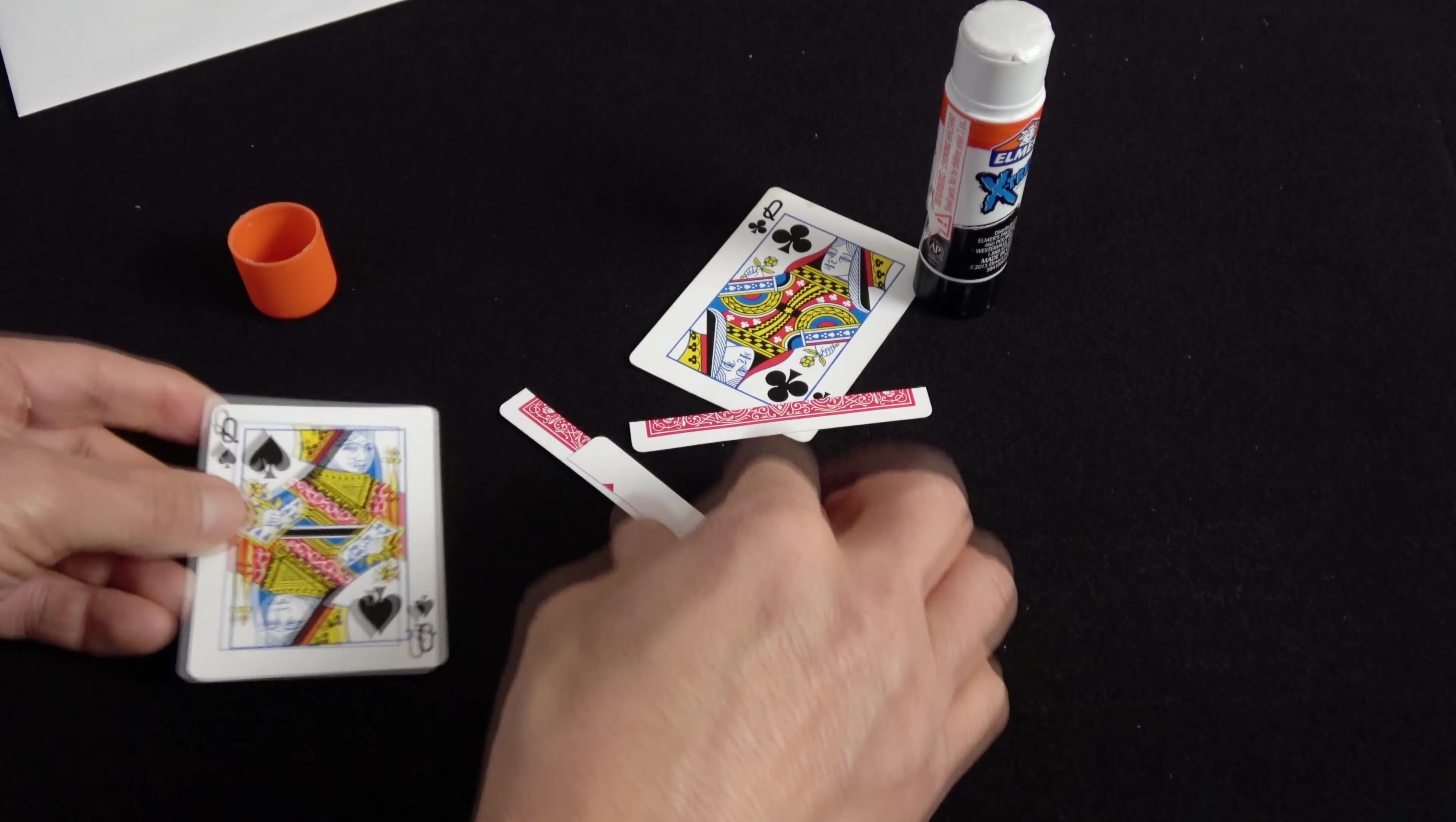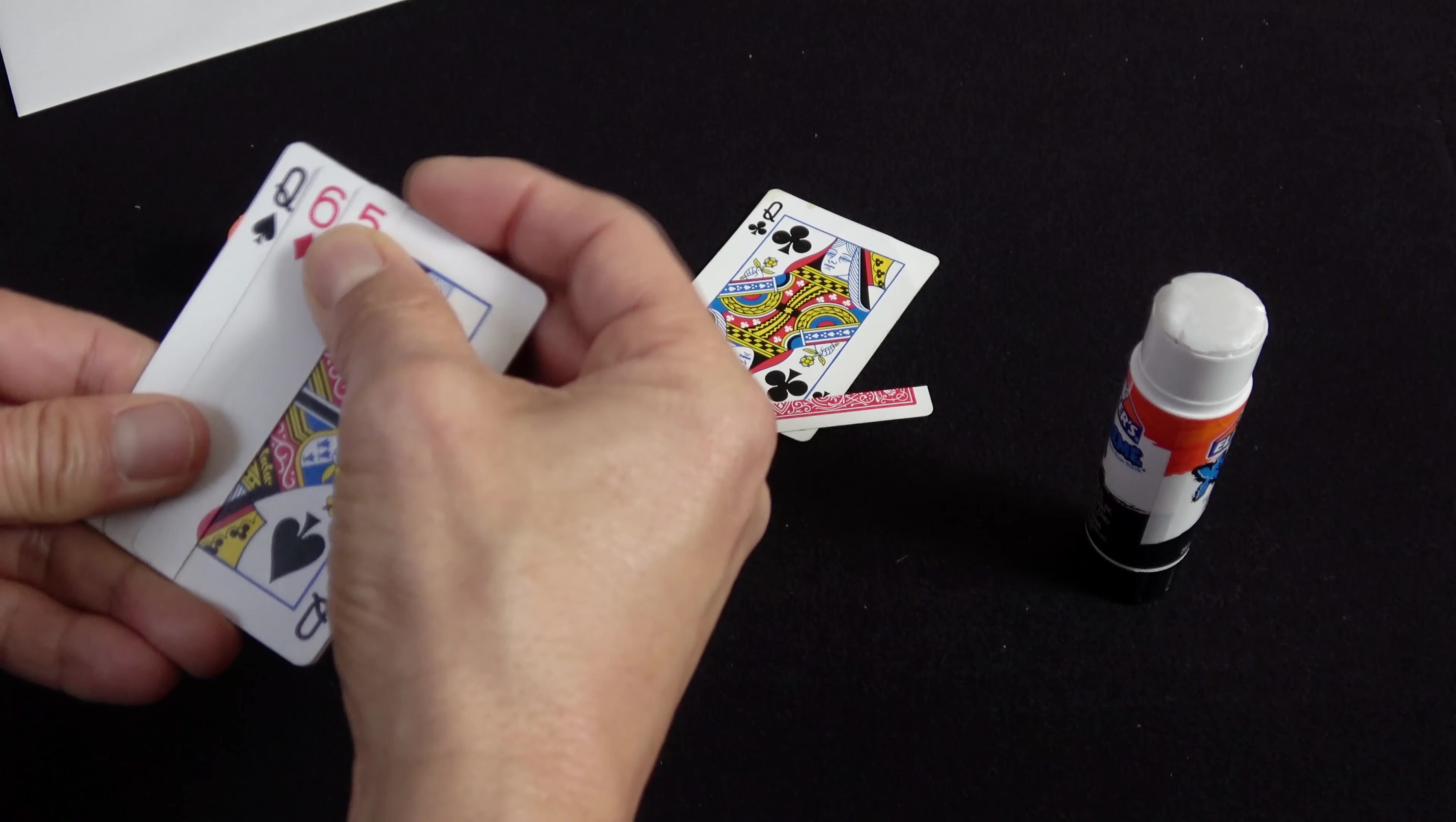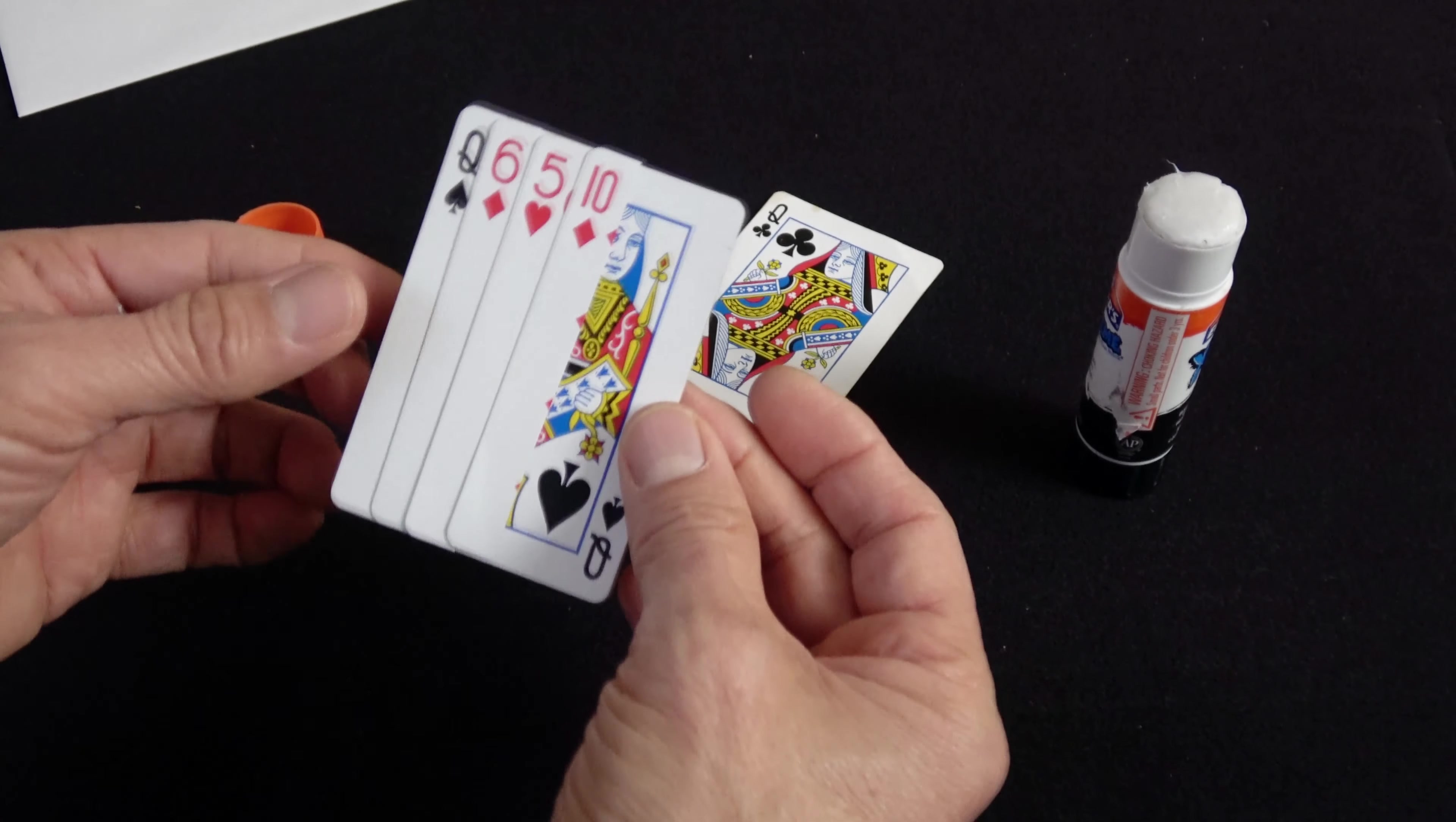So you now have a gimmick card with a queen of spades on both sides. Now on one side of this gimmick card, you're going to glue these strips from the other playing cards in a peculiar way. Glue one there, next one there, last one. Let it dry.